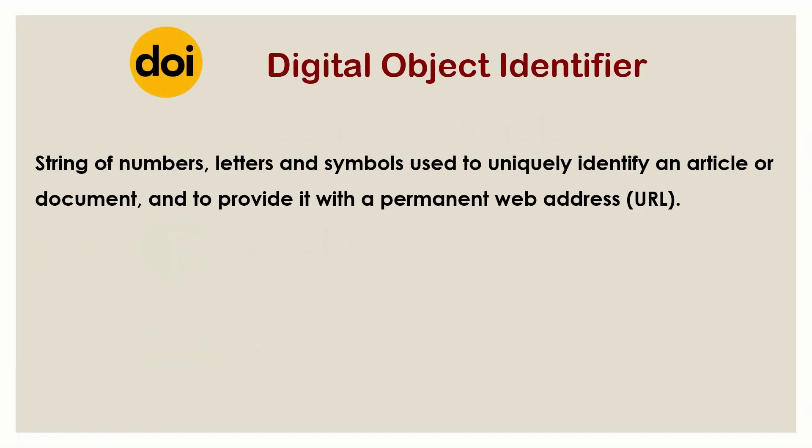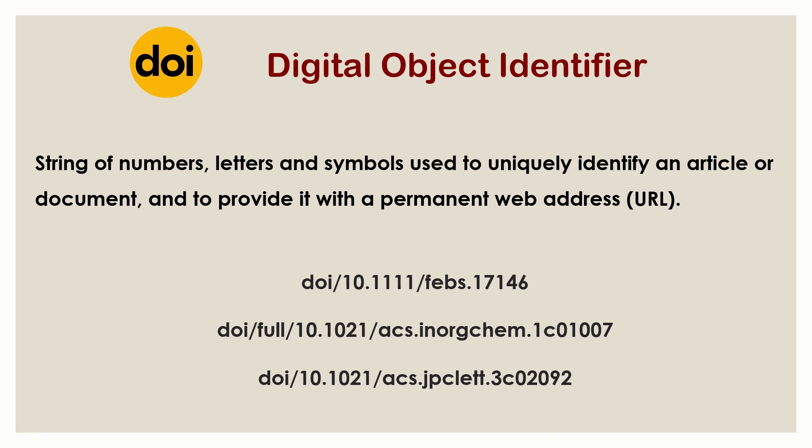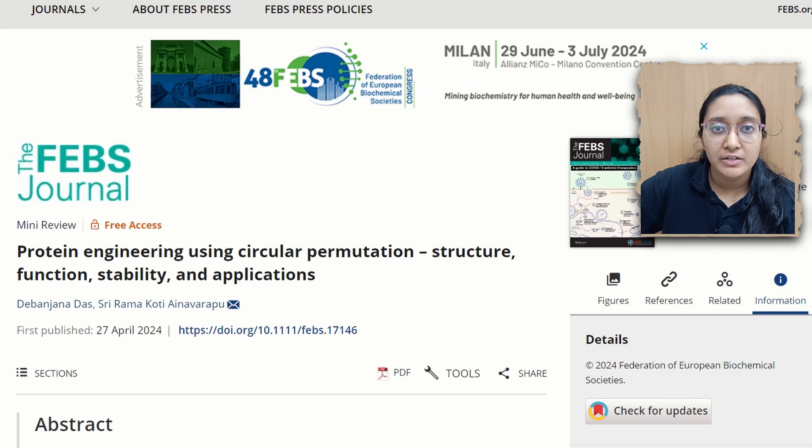In the last part of the video we will discuss DOI. DOI stands for Digital Object Identifier — a string of numbers, letters, and symbols used to uniquely identify an article, which can also redirect to the article via a URL.